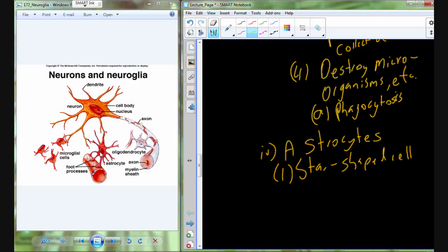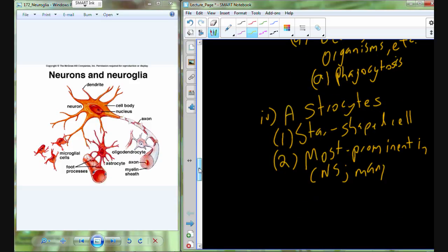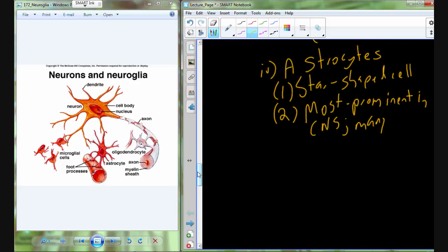Astrocytes. This is a star-shaped cell. This is actually the most prominent in the central nervous system. It's hard to point to a single function because there's many functions, but there's a couple functions that are pretty important. One of the functions is just to simply support the nervous tissue.